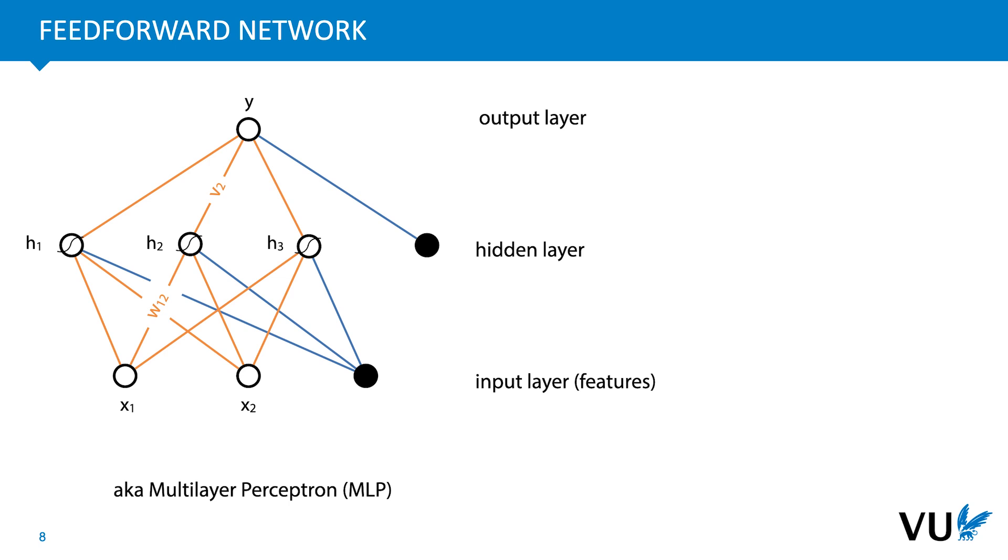Using these non-linearities, we can arrange single neurons into neural networks. Any arrangement of perceptrons and non-linearities makes a neural network. But, for ease of training, the arrangement shown here was the most popular for a very long time. It's called a feed-forward network, or a multi-layer perceptron. We arrange a layer of hidden units in the middle, each of which acts as a perceptron with a non-linearity, connecting to all input nodes. Then, we have one or more output nodes, connecting to all nodes in the hidden layer. Note three crucial properties. There are no cycles. The network feeds forward from input to output. Nodes in the same layer are not connected to each other, or to any other layer than the one just before it. And each layer is fully connected to the previous layer. Every node in the layer connects to every node in the layer before it.